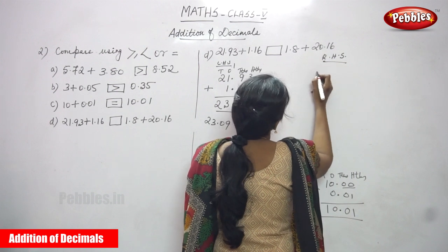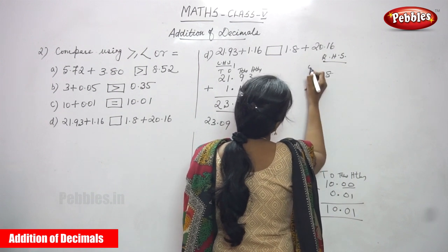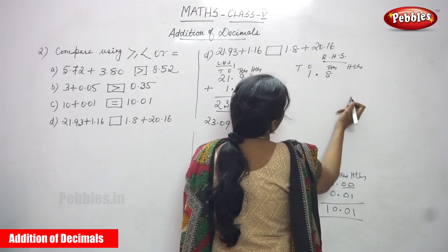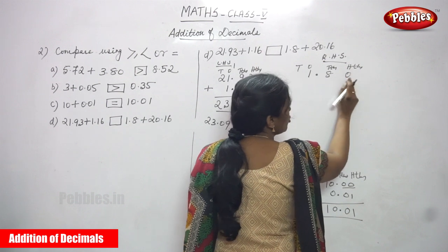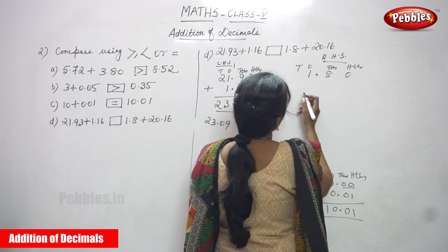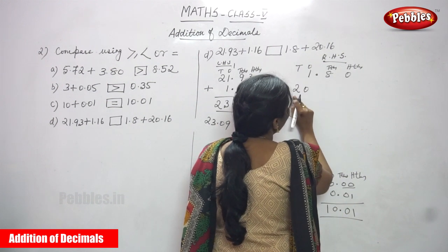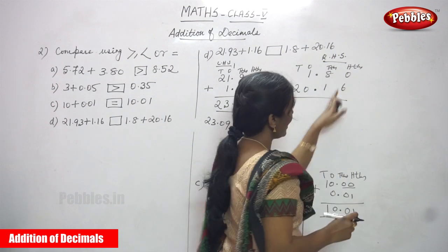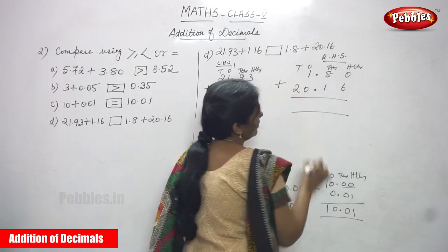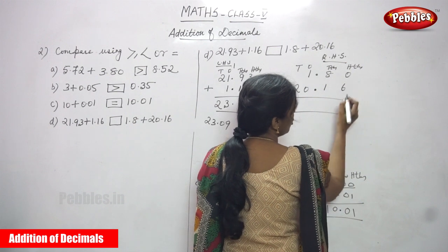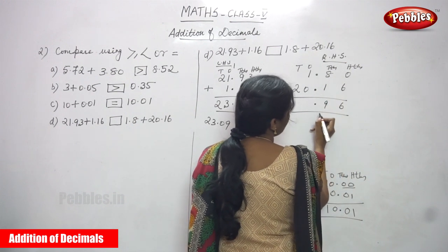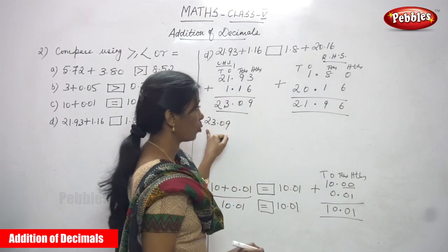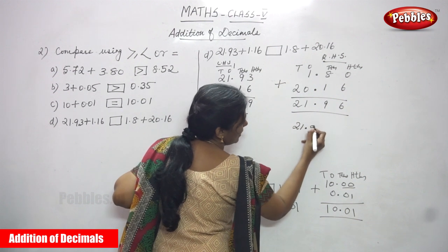RHS: 1.8 plus 20.16. Ones place, tens place, tth, hts. There is no number in the hundreds place for 1.8, so put 0 — making it 1.80. 20 is the whole part: 2 in tens place, 0 in ones place, then point, 1 and 6. Add: 0 plus 6 is 6, 8 plus 1 is 9, point, 1 plus 0 is 1, 1 plus 2 is... the answer is 21.96.